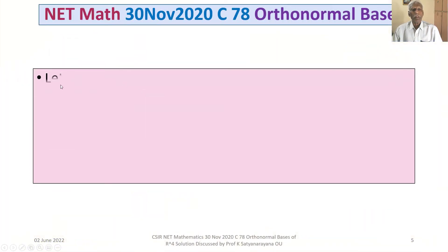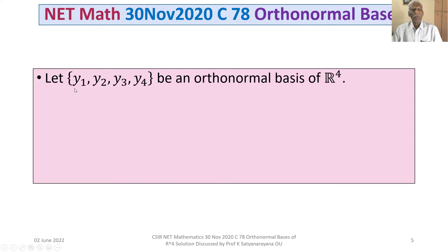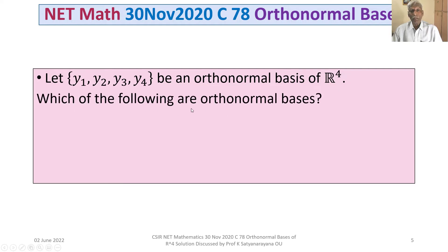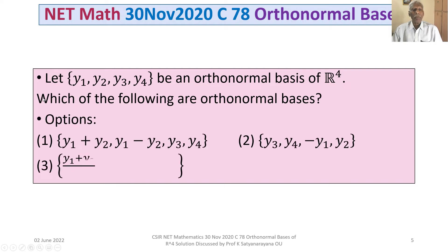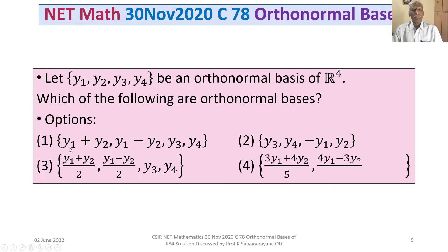The problem is: let the set consisting of y1, y2, y3, y4 be an orthonormal basis of R4. Which of the following are orthonormal bases? Option 1 is the set consisting of y1 plus y2, y1 minus y2, y3, y4.